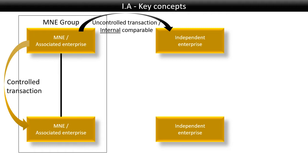However, it could be that the associated enterprise sells 10 of these to each other associated enterprise and a hundred million to the independent enterprise. Then these transactions are potentially comparable, but you would need to make adjustments. Because it could be that you give your independent enterprise a huge volume discount, which you wouldn't give if it was only buying 10 like your associated enterprise. Because it is buying a hundred million, it might get things for a much lower price, and you can't say the prices are comparable if you don't account for this volume discount.